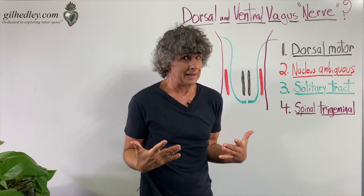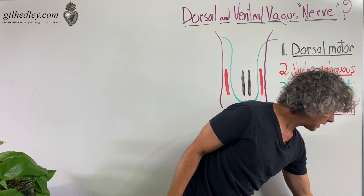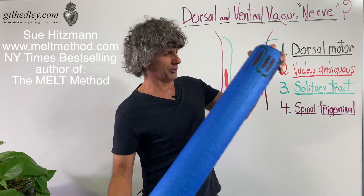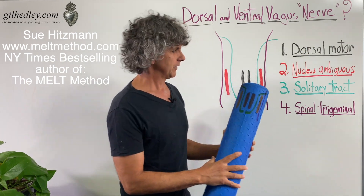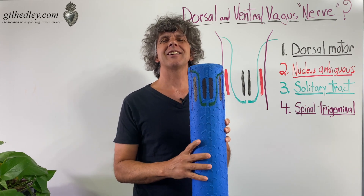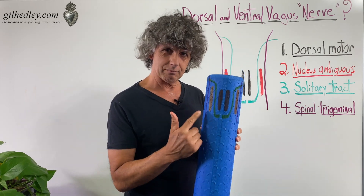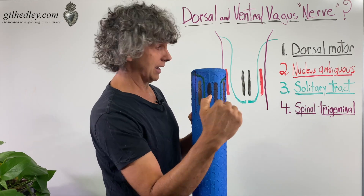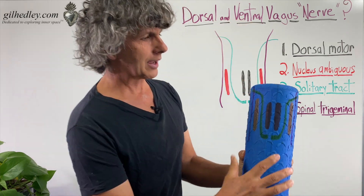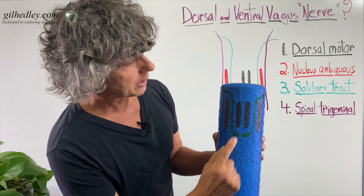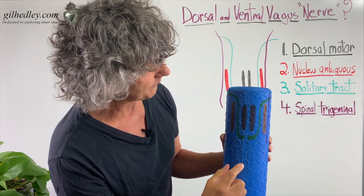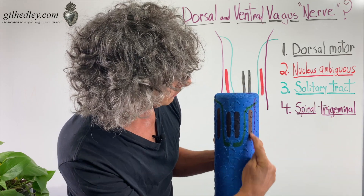This is drawn on a flat surface so you can't tell which one is forward relative to the other. That's why I'm grateful my friend Sue Hitsman gave me this melt roller, on which I've drawn the nuclei of the vagus nerve — it looks like a medulla oblongata. We're looking at it from behind. Here's the dorsal motor nucleus of the vagus nerve, and here's the nucleus ambiguus.